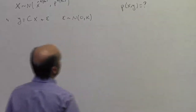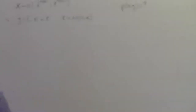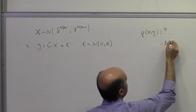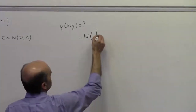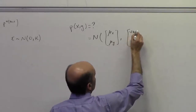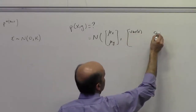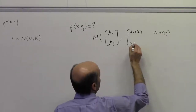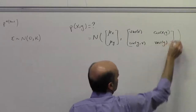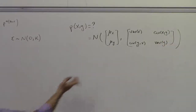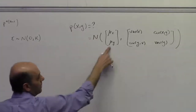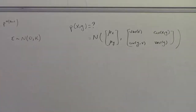What is this joint probability quantity? It's some normal distribution with mean mu-x and mu-y, and variance-covariance matrix with blocks: variance of x, covariance of x and y, covariance of y and x, and variance of y. That's the basic structure of this joint probability — it has this mean and this variance-covariance matrix. So what are those?